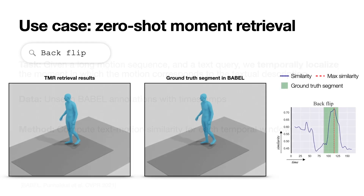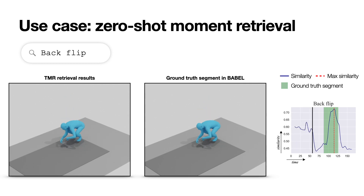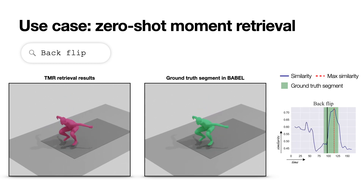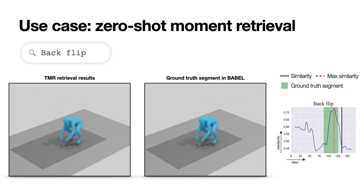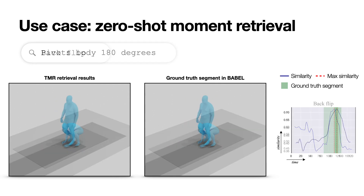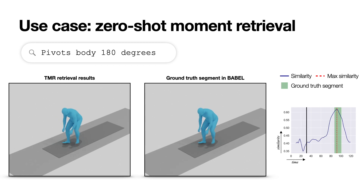For the query 'backflip,' the model accurately localizes this action in the motion sequence. The plot on the right shows the similarity over time with a peak at the ground truth location. The same conclusion holds for the text query 'pivots body 180 degrees.'